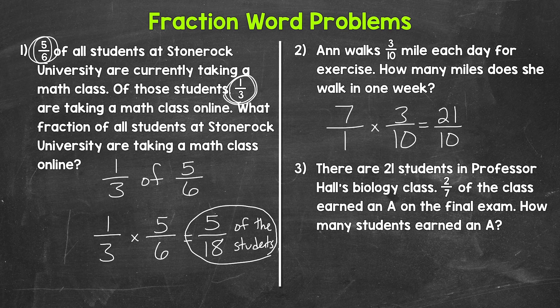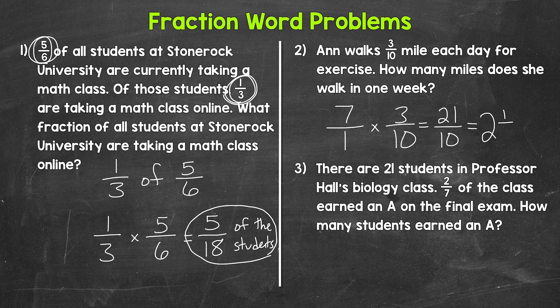21-tenths is an improper fraction, so let's convert it to a mixed number by dividing the numerator, 21, by the denominator, 10. How many whole groups of 10 are in 21? Two. That gets us to 20, so we have a remainder of one. That's our numerator of the fractional part, and we keep the denominator of 10. So we end up with two and one-tenth miles.